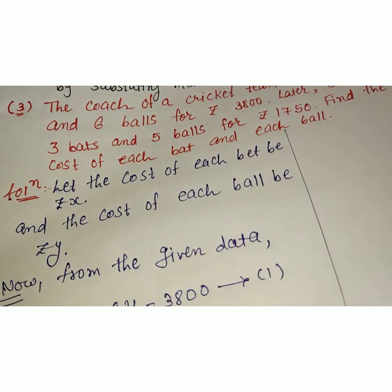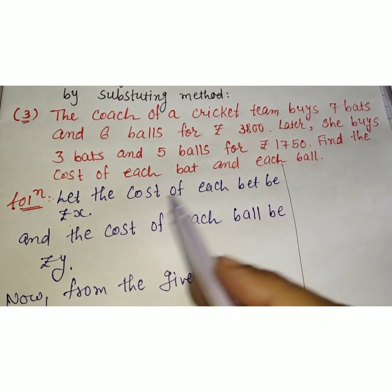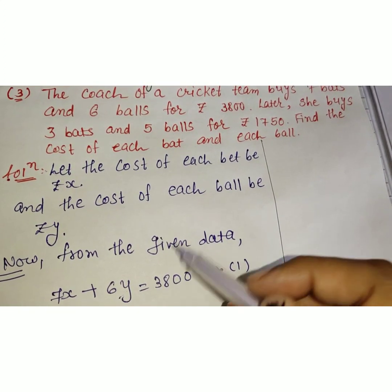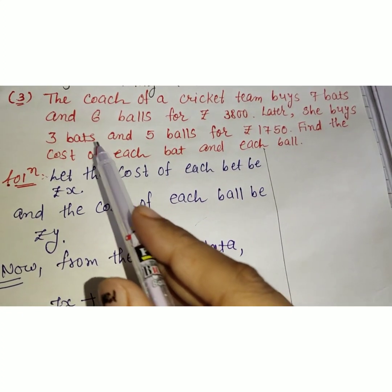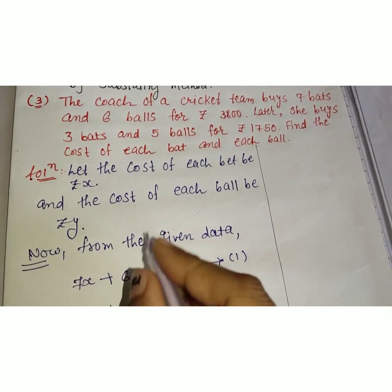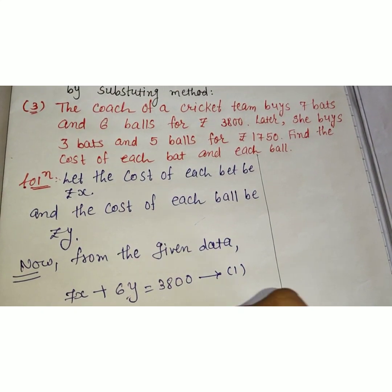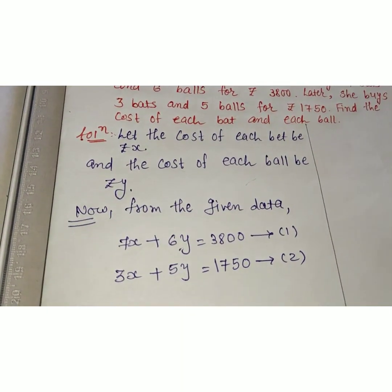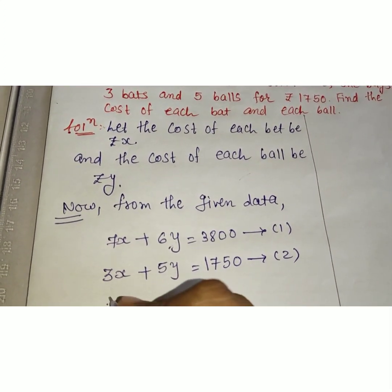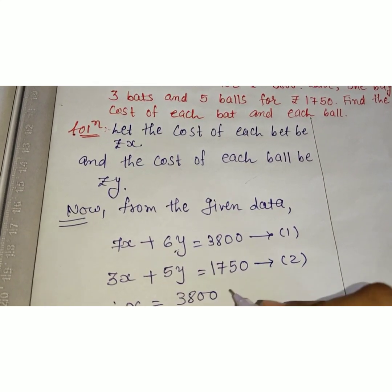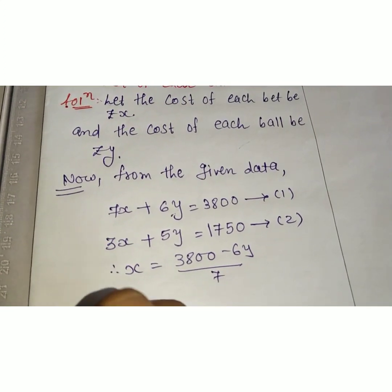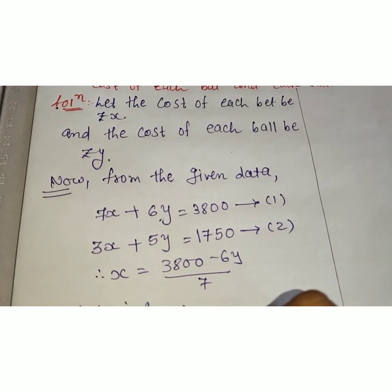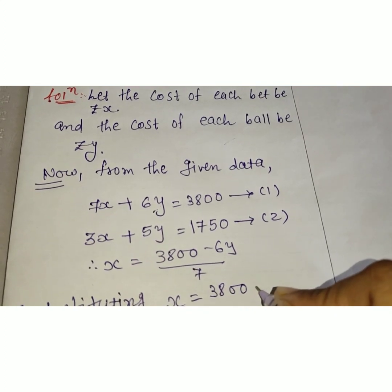As per the first condition: 7x + 6y = 3800. As per the second condition: 3 bats and 5 balls gives us 3x + 5y = 1750. Now substituting x = (3800 − 6y) / 7 into equation 2.